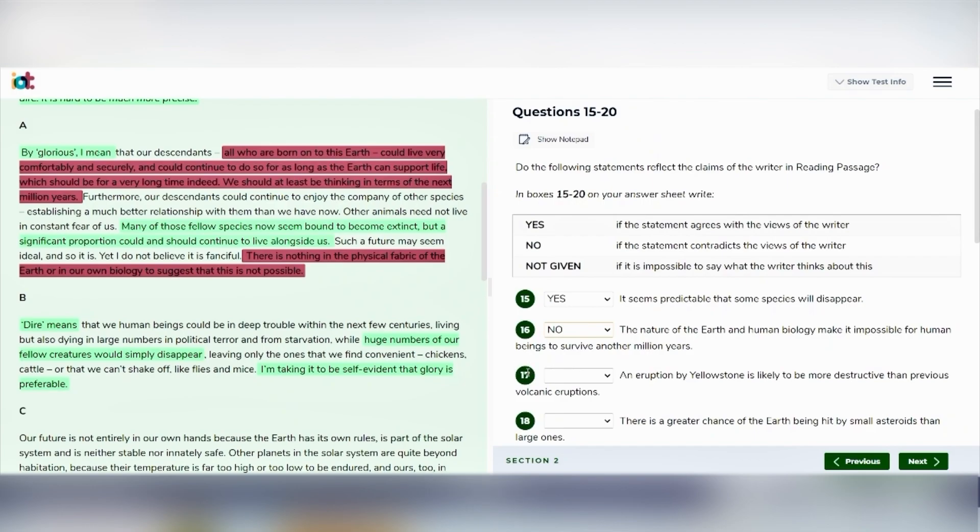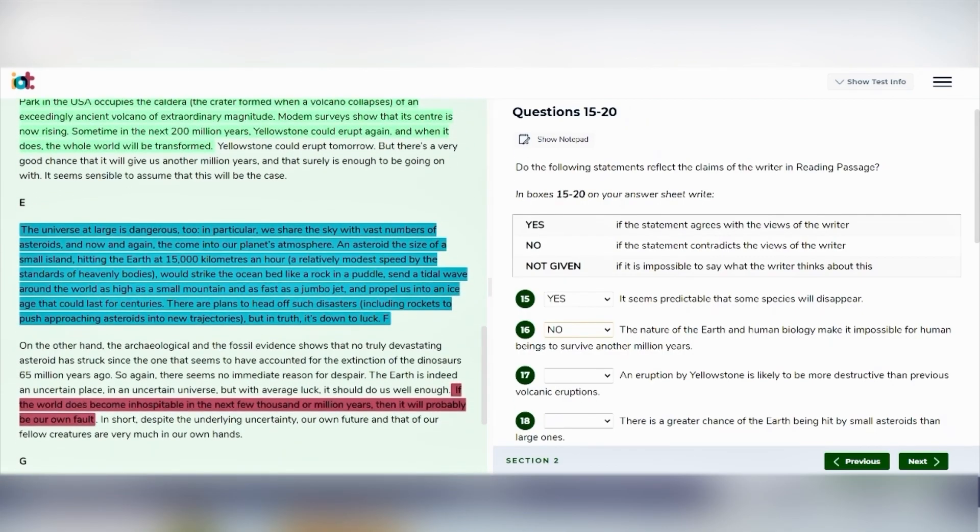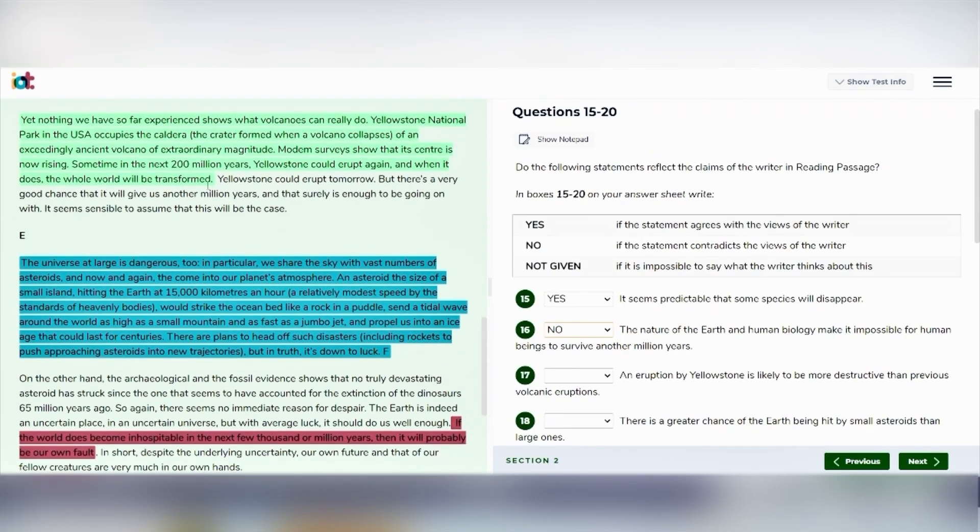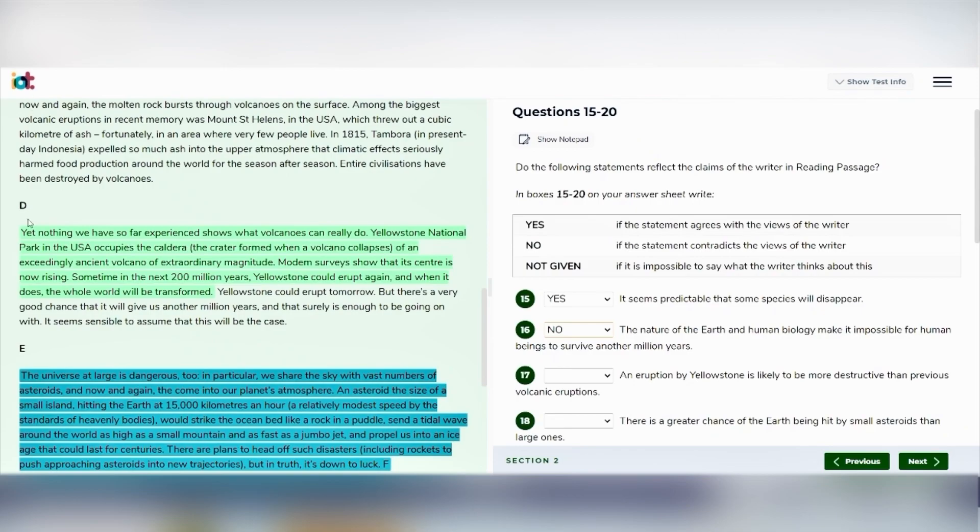Moving on to question number 17. The statement made is an eruption by Yellowstone is likely to be more destructive than previous volcanic eruptions. When I first read the passage I found that volcanoes are discussed in paragraph D. So I have already highlighted relevant information. It says yet nothing we have experienced we have so far experienced shows what volcanoes can really do. Yellowstone National Park in the USA occupies the caldera of an exceedingly ancient volcano of extraordinary magnitude. Modern surveys show that its center is now rising.